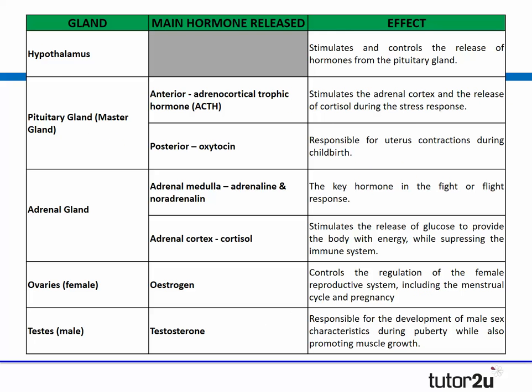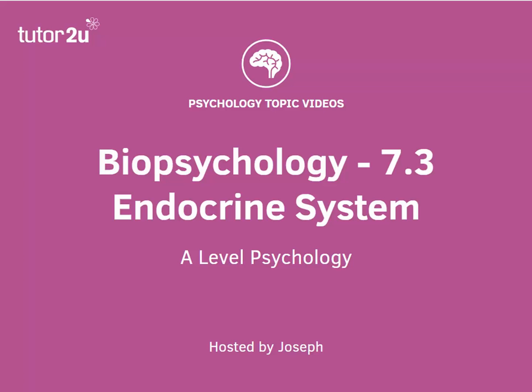So there you have it. In this short topic video we've examined the hormones released by the different glands in the body and the effects these hormones have. On screen now you'll see a summary table with the main glands, the main hormones released, and the effects that these hormones have, which may provide a useful revision table. Thank you for watching this short biopsychology topic video. For more topic videos subscribe to our YouTube channel and follow us on Twitter at tututupsych.